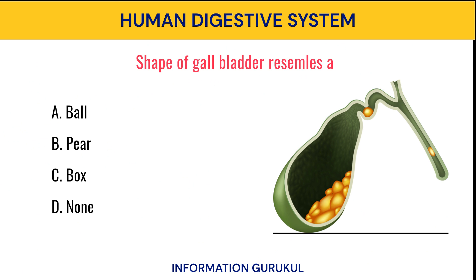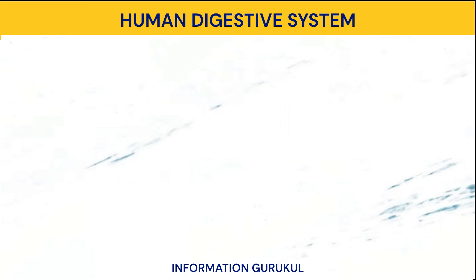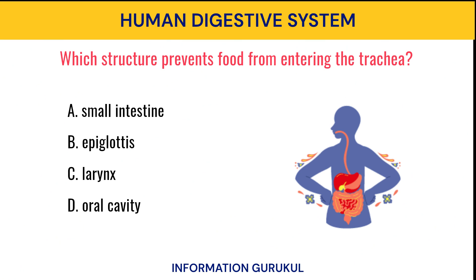The shape of the gallbladder resembles a pear. Which structure prevents food from entering the trachea? Epiglottis.